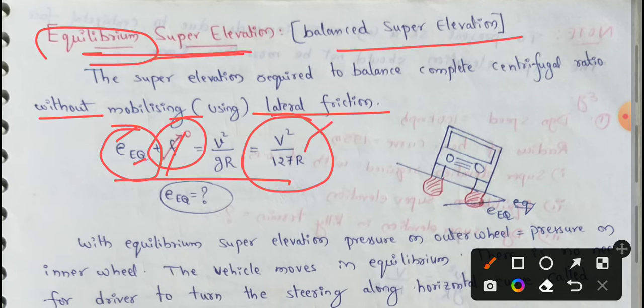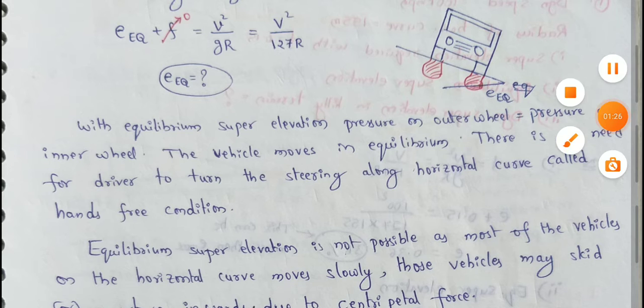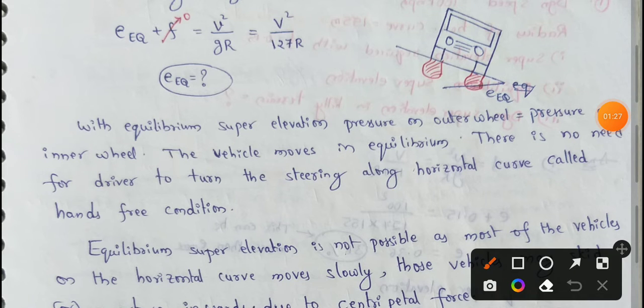So the equation becomes v²/(127r) - this equation we have to find out.